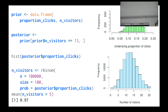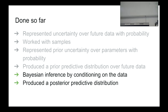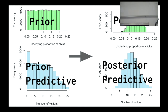So what have we achieved? We've done Bayesian inference by conditioning on the data, and we've produced a posterior predictive distribution. We've gone from prior to prior predictive, to posterior and posterior predictive — using only very basic R commands: generating and filtering. Almost no probability theory explicitly, but we've covered almost all the key parts of Bayesian inference and Bayesian statistics.